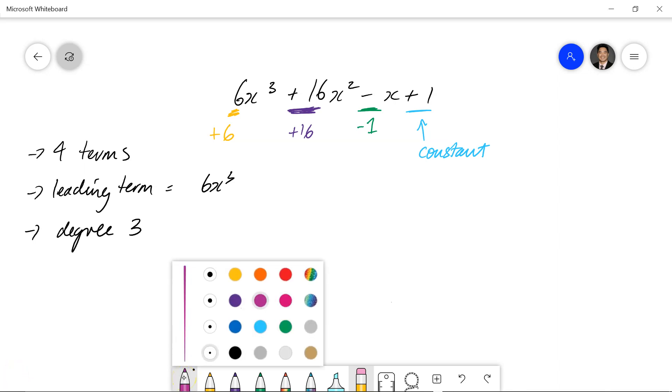If we had something like x to the power of 4, plus 5x cubed, minus 6x squared, minus 7, we still have four terms here. We've got degree 4 in this case, because the leading term we have here, not necessarily at the front. It's the term that has the highest power.